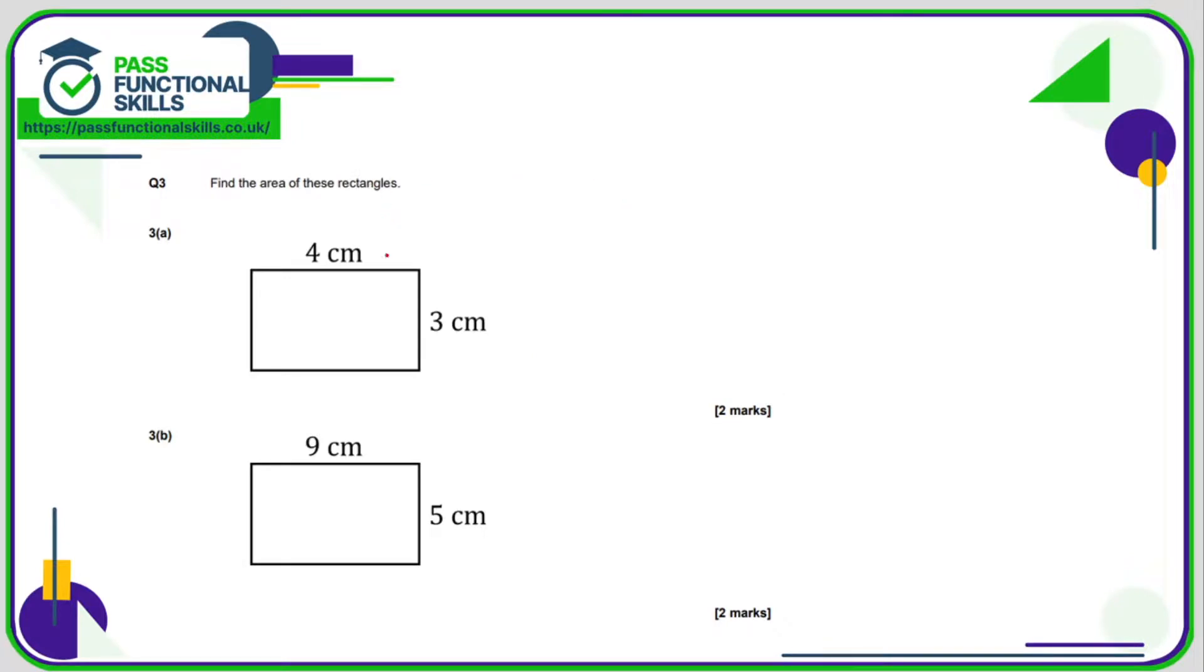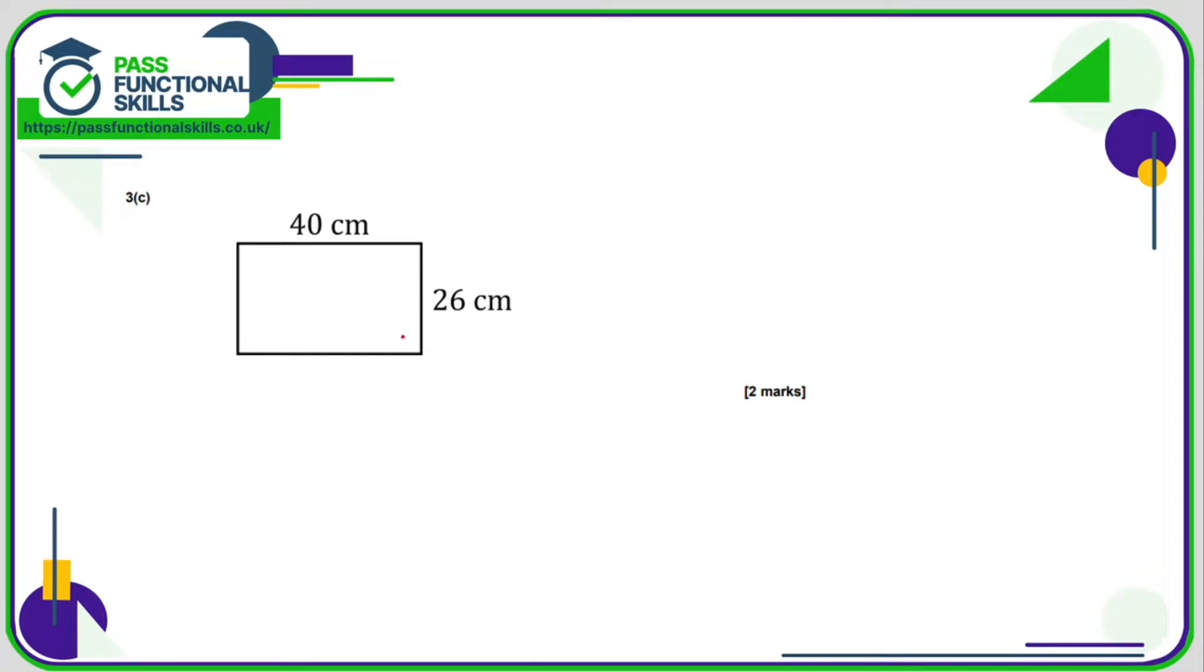On the area of these rectangles, that's nice and easy. 4 times 3, which is 12 square centimetres, 45 square centimetres, 9 times 5, 40 times 26. We can use a calculator here, which is good. So just type it in and you'll get 1,040 square centimetres.